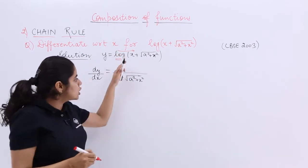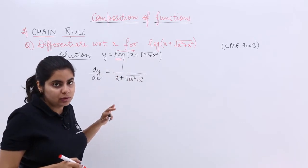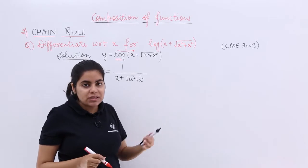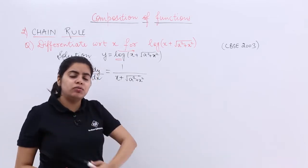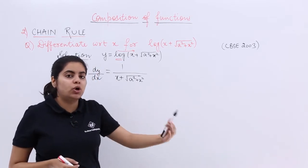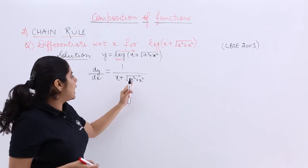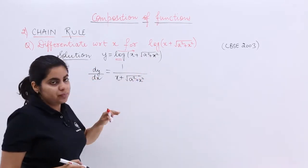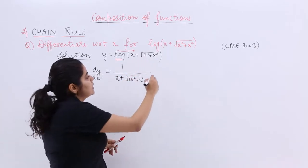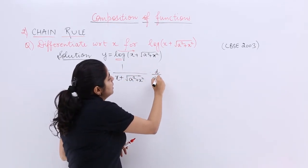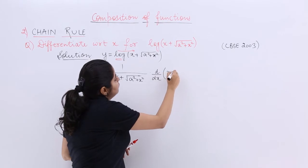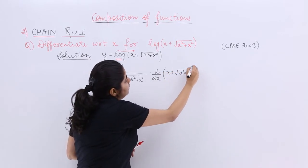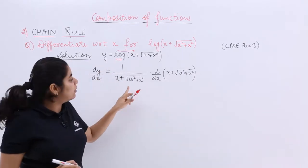You did the reciprocal for the log, but the bracket is also there. To take the differentiation, you must differentiate all the terms on your way. So after handling log, you now take the differentiation of the bracket. Let's see what's inside the bracket step by step.